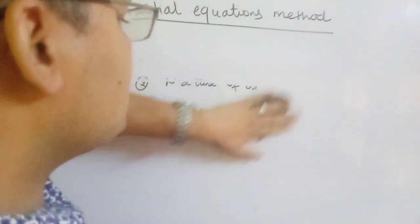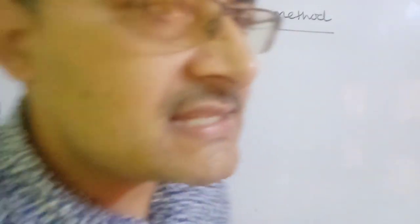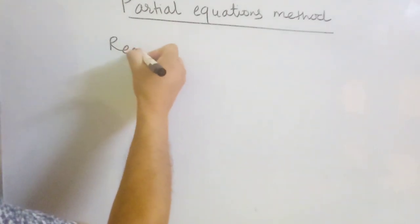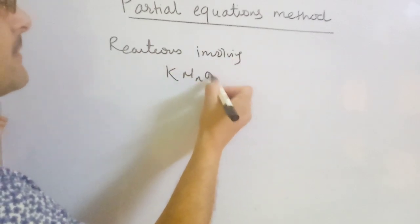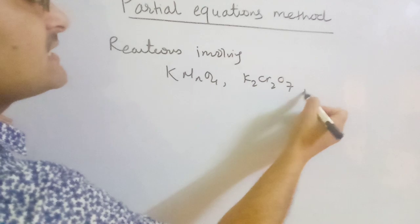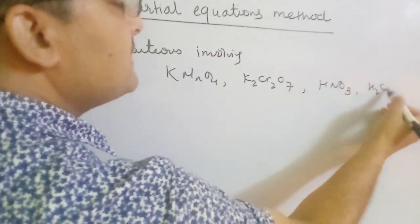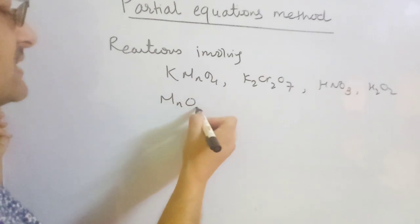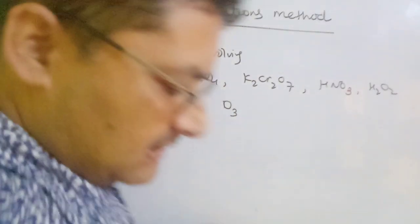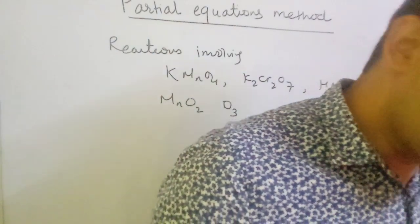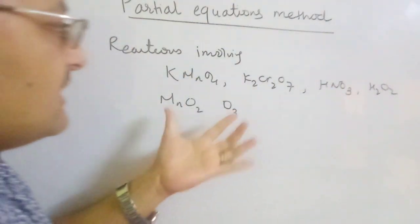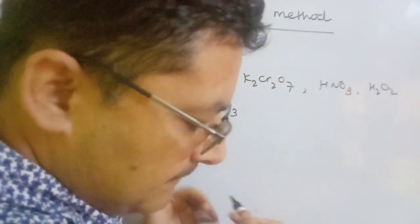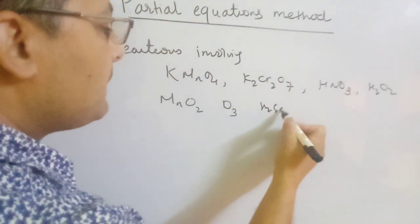Partial equations method is generally used for compounds which are oxidizing agents and have an oxygen atom as a constituent. For example, reactions involving KMnO₄ (potassium permanganate), potassium dichromate, nitric acid, hydrogen peroxide, MnO₂ (manganese dioxide), O₃ (ozone), and H₂SO₄. If these compounds are involved, then the equations can be easily balanced by the partial equations method.